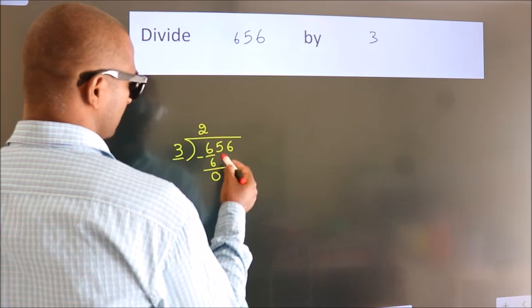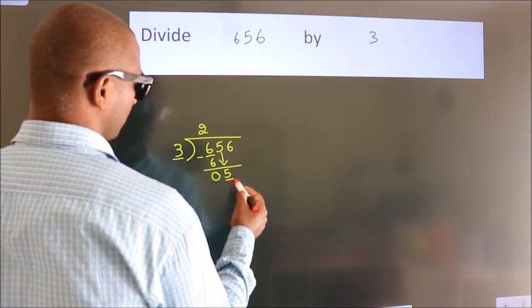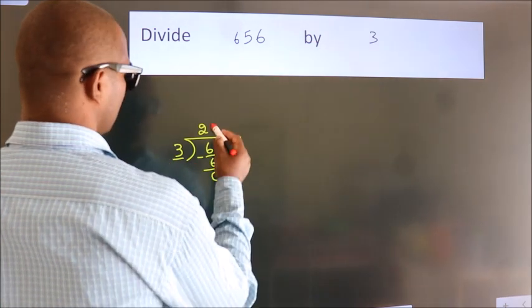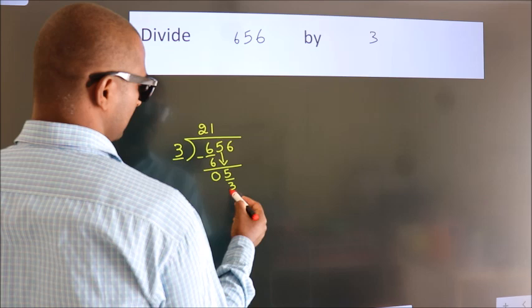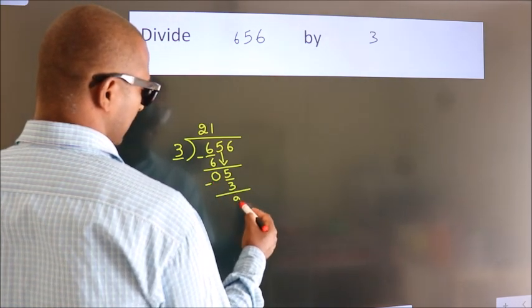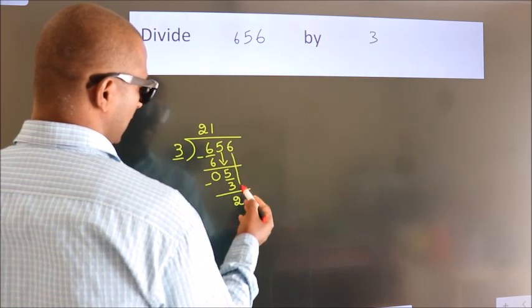After this, bring down the beside number. So, 5 down. So, 5. A number close to 5 in 3 table is 3 1s, 3. Now, we subtract. We get 2. So, after this, bring down the beside number.